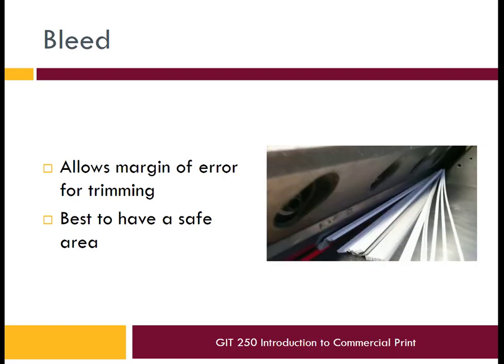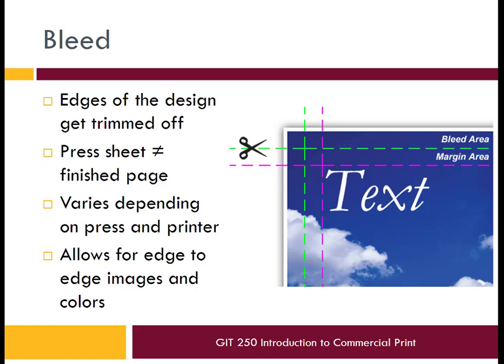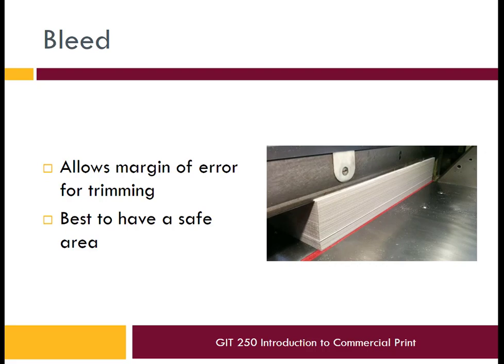Using proper bleed settings gives you a margin of error. Similarly, having a safe area will prevent errors in the other direction — you don't want important design elements clipped off during trimming. The amount of bleed varies from one print shop to the next depending on equipment and tolerances. The print lab on campus asks for 1/16th of an inch (0.0625 inches) of bleed. Some places use an eighth of an inch (0.125) or even a quarter inch if cutting by hand. The idea is to give yourself leeway so you get a nice printed document that goes from edge to edge.